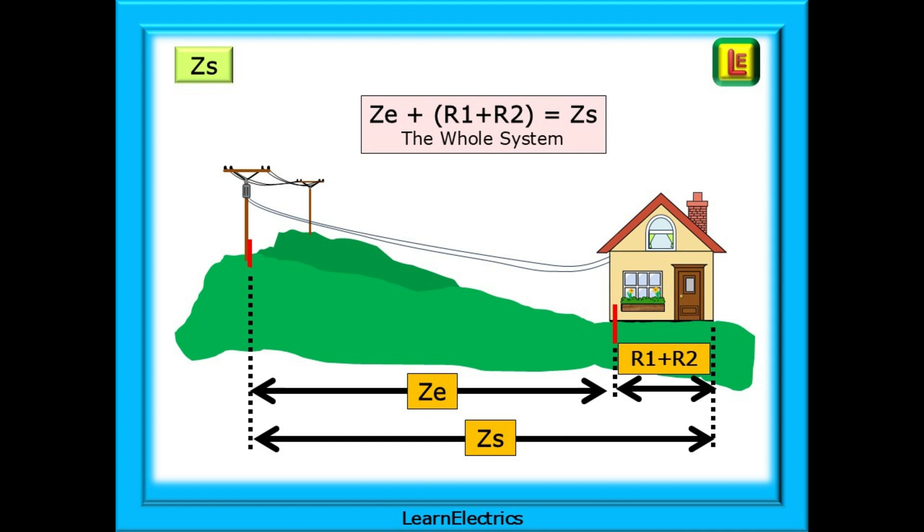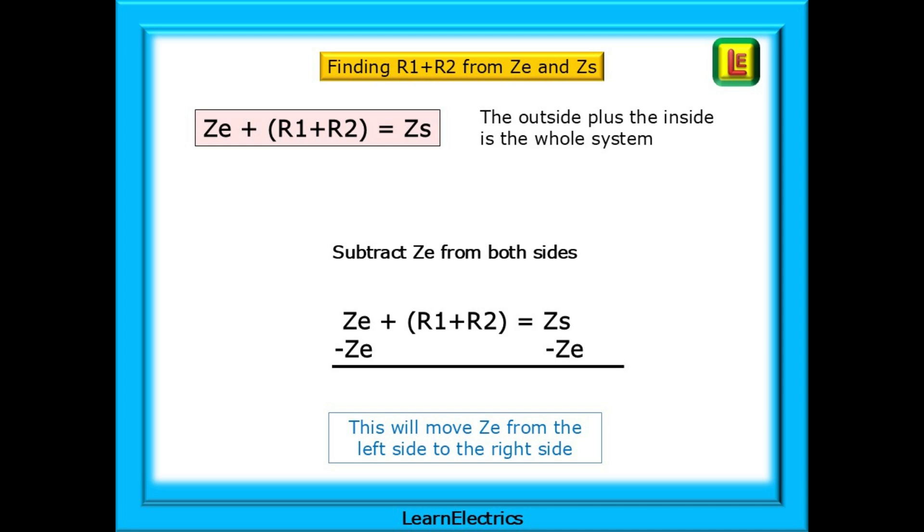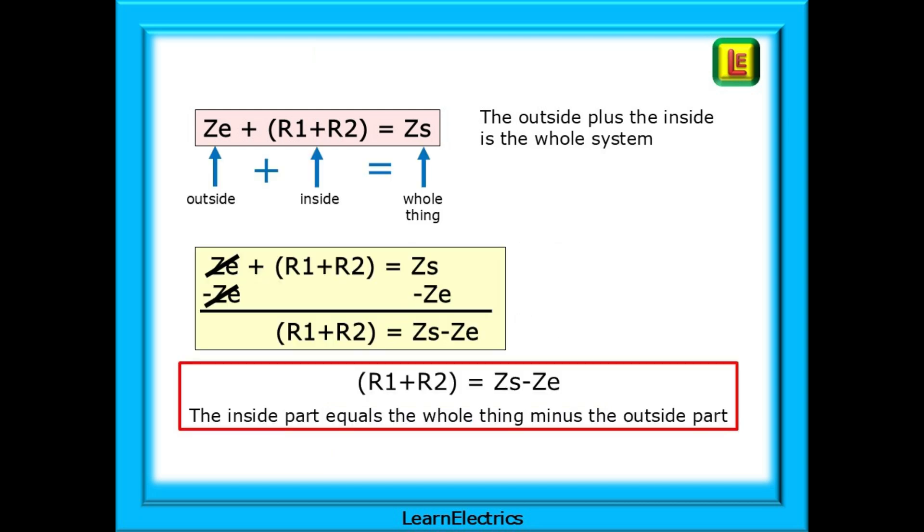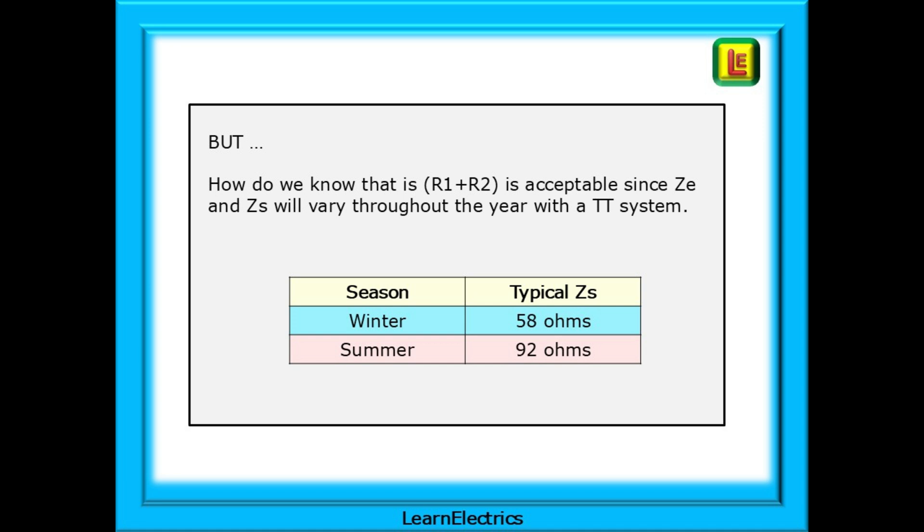ZE is the external part from the house to the supply transformer, and then we have R1 plus R2 for each internal circuit. We can say that ZE added to R1 plus R2 equals ZS, the whole system. How do we find R1 plus R2 from ZE and ZS? The equation shows that ZE plus R1 plus R2 equals ZS. If we subtract ZE from both sides of the equation, this will have the effect of moving ZE from the left side to the right side. And we are left with R1 plus R2 is equal to ZS minus ZE. In other words, the inside part equals the whole thing minus the outside part. But how do we know that R1 plus R2 is acceptable, since ZE and ZS will vary throughout the year with a TT system?